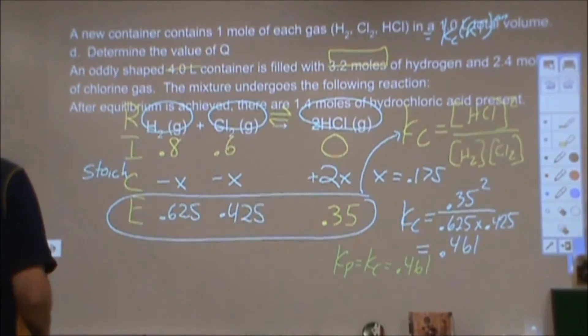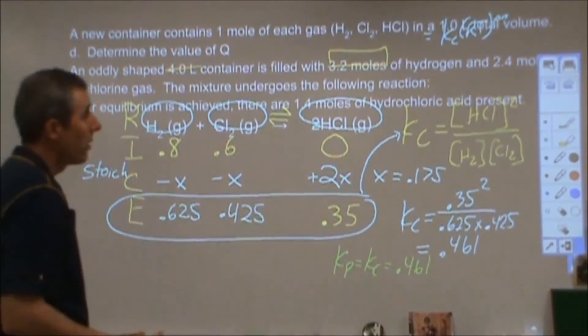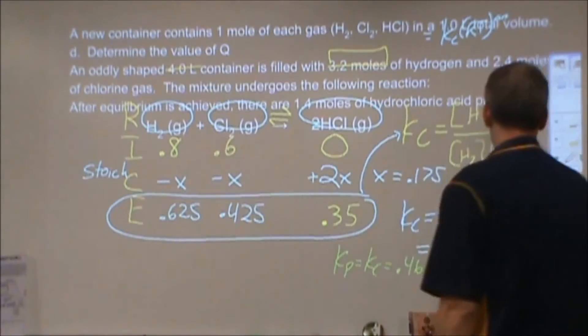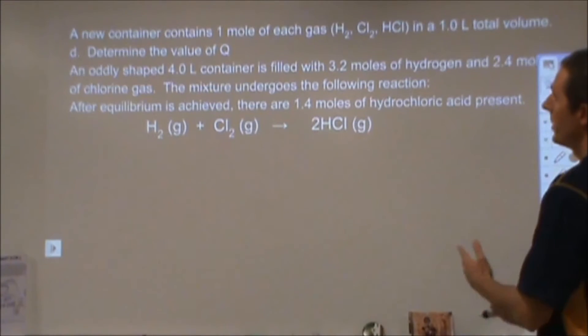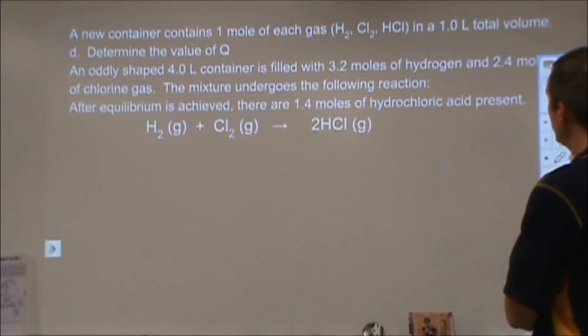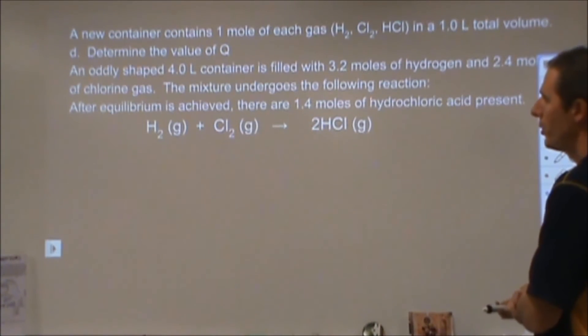Moving on from there to part d. Now we're restarting, and we have some new information, so I'm going to go ahead and clear up a lot of this board. So now it says we start with one mole of each gas in a one liter volume container. Figure out the value of Q.